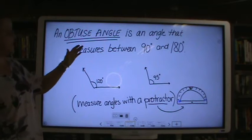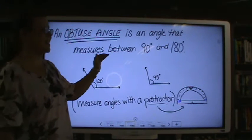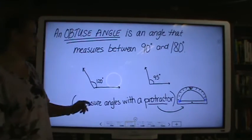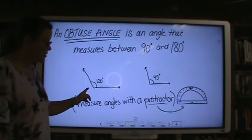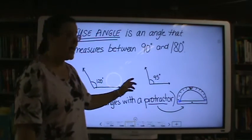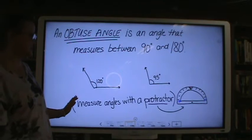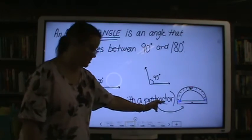An obtuse angle is an angle that measures between 90 degrees and 180 degrees. A 120 degree angle or a 95 degree angle. Most of the time we can measure these angles with a protractor.